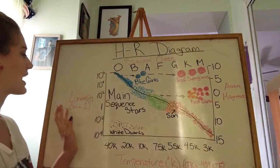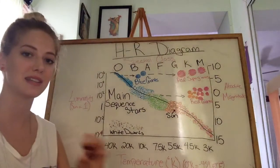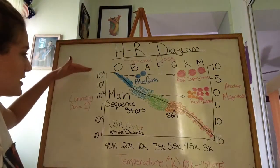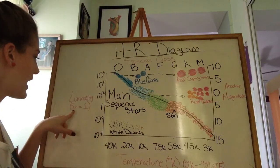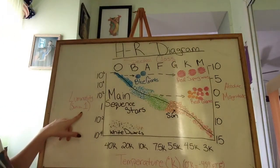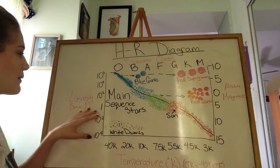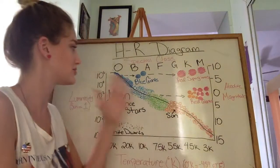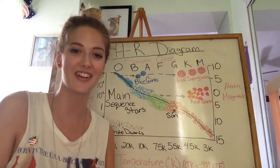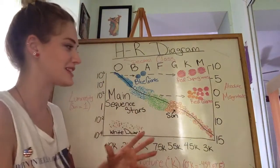Then on this side I have the luminosity. Luminosity is its brightness. Up here is extremely bright, down here is extremely dim. I have the sun at 1, so that way we can compare how our own star is compared to other stars on the HR diagram with relative brightness.